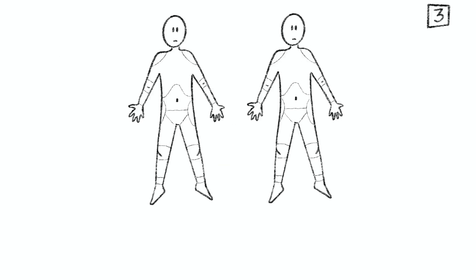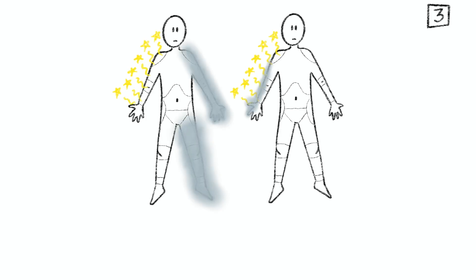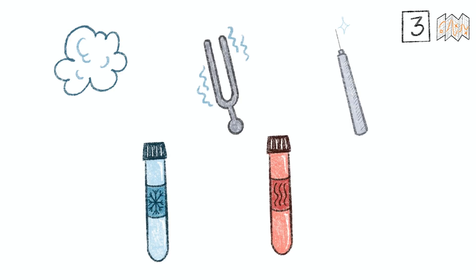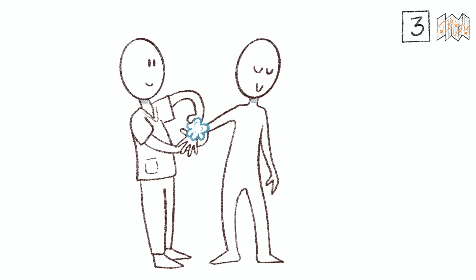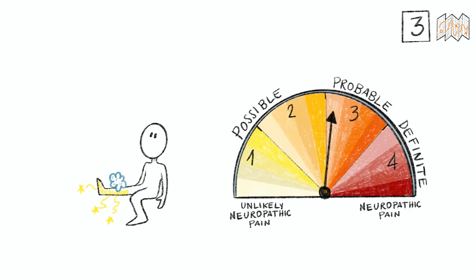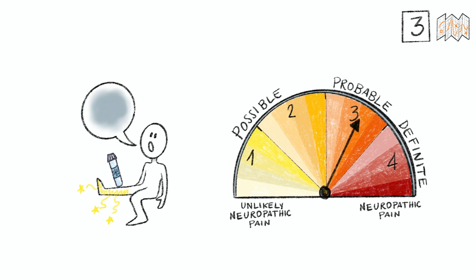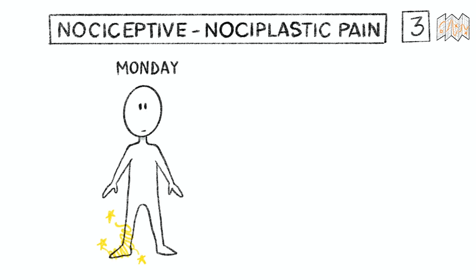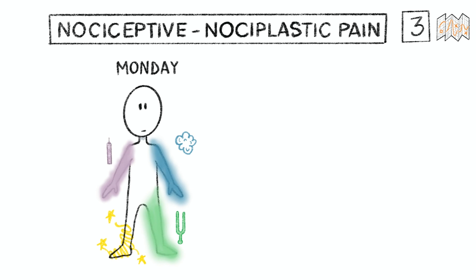We then move on to criterion 3, which asks whether the pain is associated with sensory signs in the same neuroanatomically plausible distribution. This should be probed through a sensory neurological examination of both large and small fibre function. A comprehensive assessment of touch, vibration, pinprick, and thermal sensation is ideal. We typically look for negative sensory signs such as partial or complete sensory loss of function, but positive sensory signs such as allodynia may also be indicative. A range of tests that consistently point towards the same pattern increases our diagnostic certainty. In contrast, sensory loss that sometimes occurs in nociceptive or nociplastic pain does often not follow neuroanatomical borders and is not reproducible across different sensory modalities or over time.